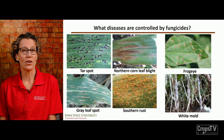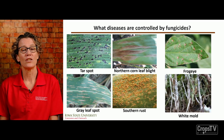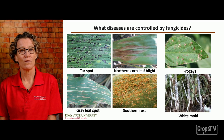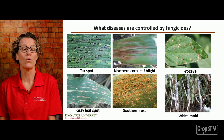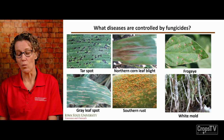What diseases are controlled by fungicides? Obviously, those diseases caused by fungi. Here in Iowa, the most important diseases we'd be thinking about for spraying a fungicide on corn would be tar spot, northern corn leaf blight, gray leaf spot, and southern rust. On soybeans, we'd be using fungicides to manage frogeye leaf spot and also white mold.